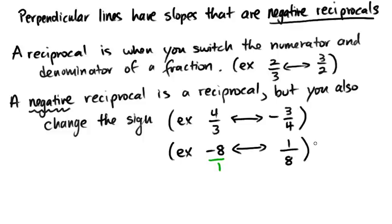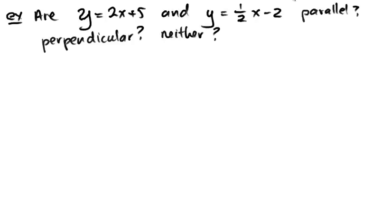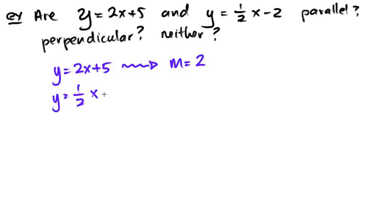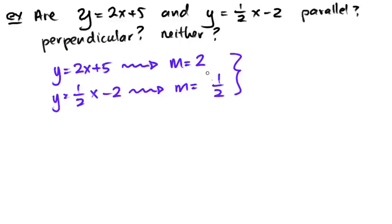Let's look at some examples using parallel and perpendicular lines. Are the lines y equals 2x plus 5 and y equals one half x minus 2 parallel, perpendicular, or neither? The first line is in slope-intercept form, so its slope is 2. The second line has a slope of positive one half. They are not parallel since the slopes differ, and they are not perpendicular since both slopes are positive — they are not negative reciprocals of each other. So the answer is neither.